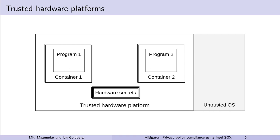Trusted hardware platforms address the problem of running a program on a given machine when the OS may be vulnerable or malicious, and base their trust in a small set of hardware. Here we have two programs running in containers on the same machine, with the OS being untrusted. We obtain two crucial guarantees: the state of this program, given by the content of its registers, is not accessible by the untrusted OS. Secondly, once this program is loaded into the container, the untrusted OS cannot modify it without being detected.